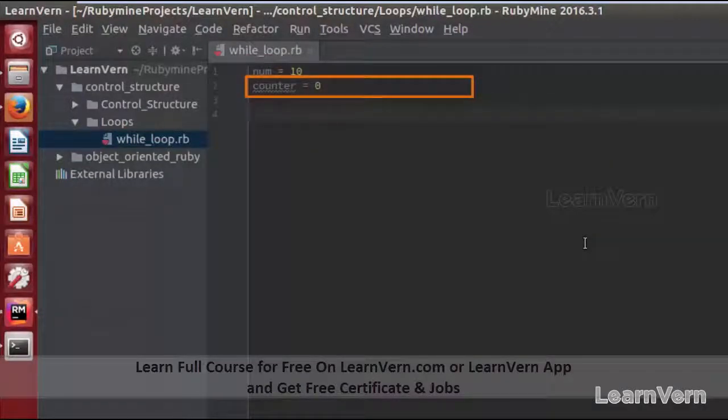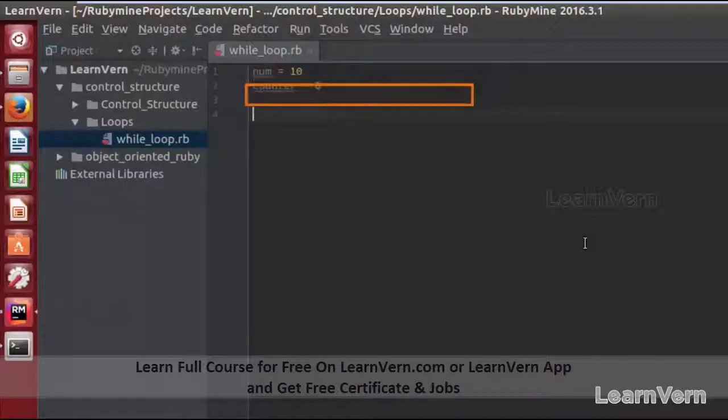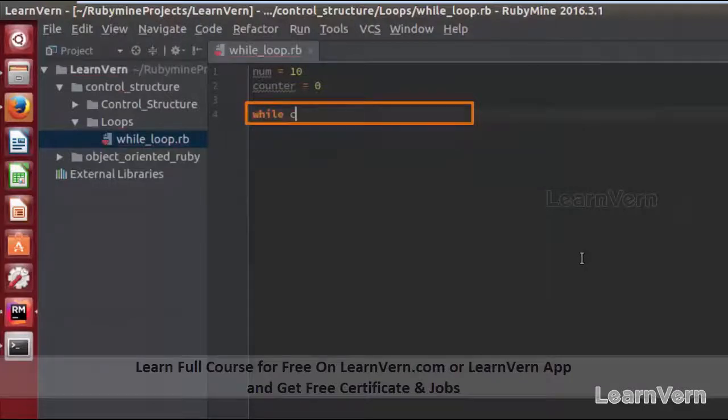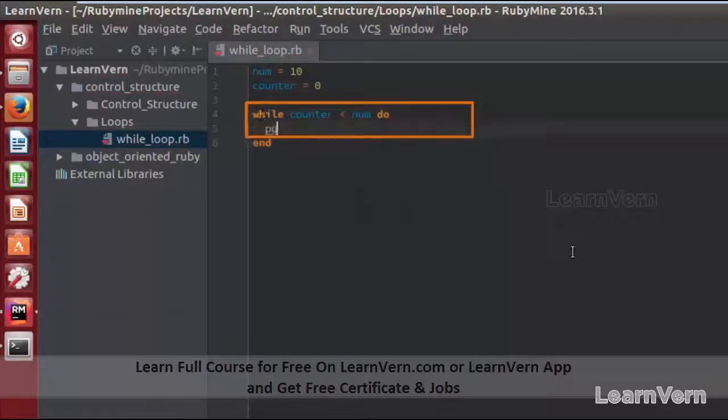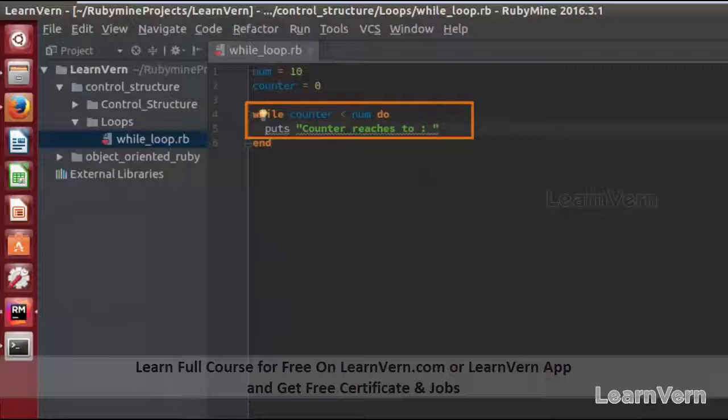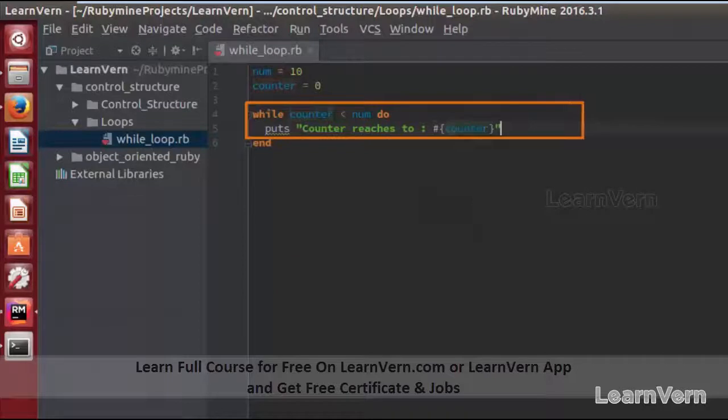Now I want to iterate till my counter variable reaches to 10. So let me write: while counter is less than number do. It will execute puts. Here we will print our number: counter reaches to, and our string interpolation.